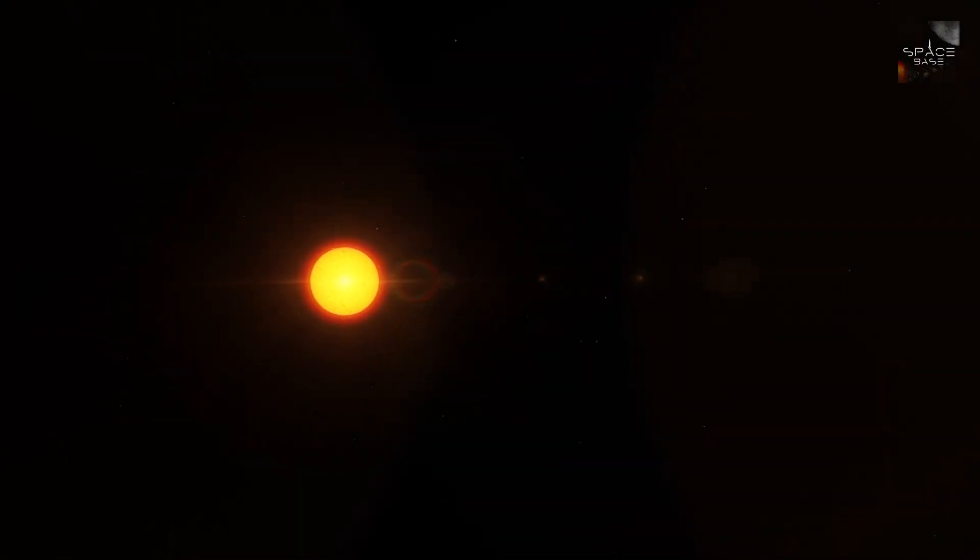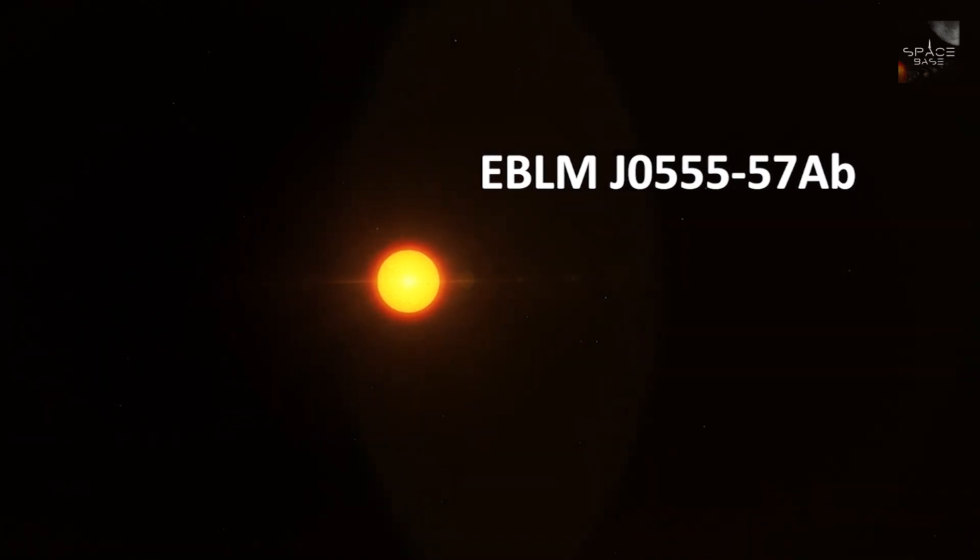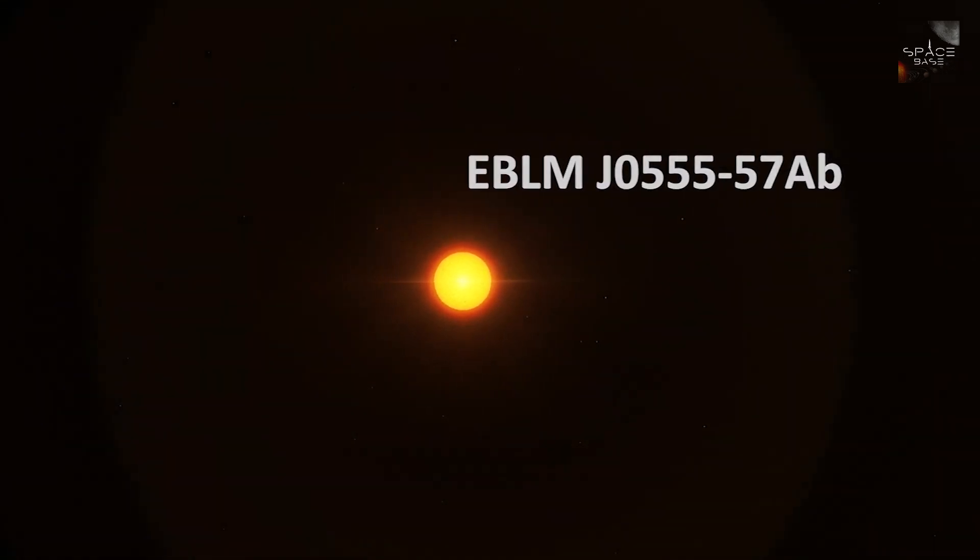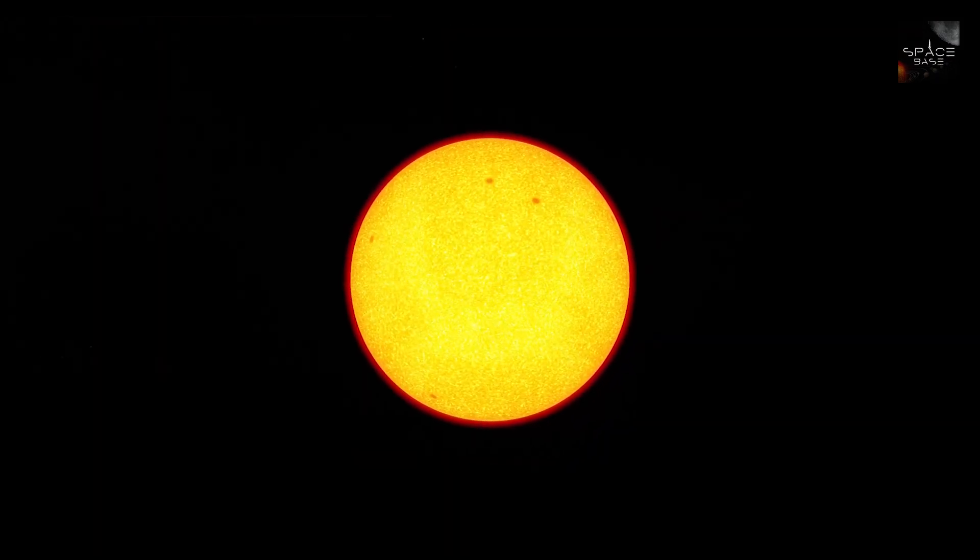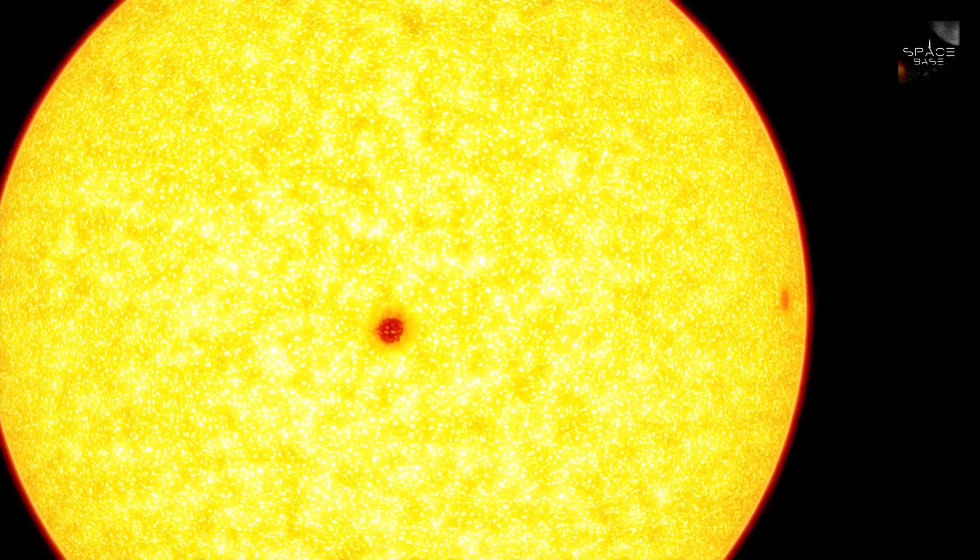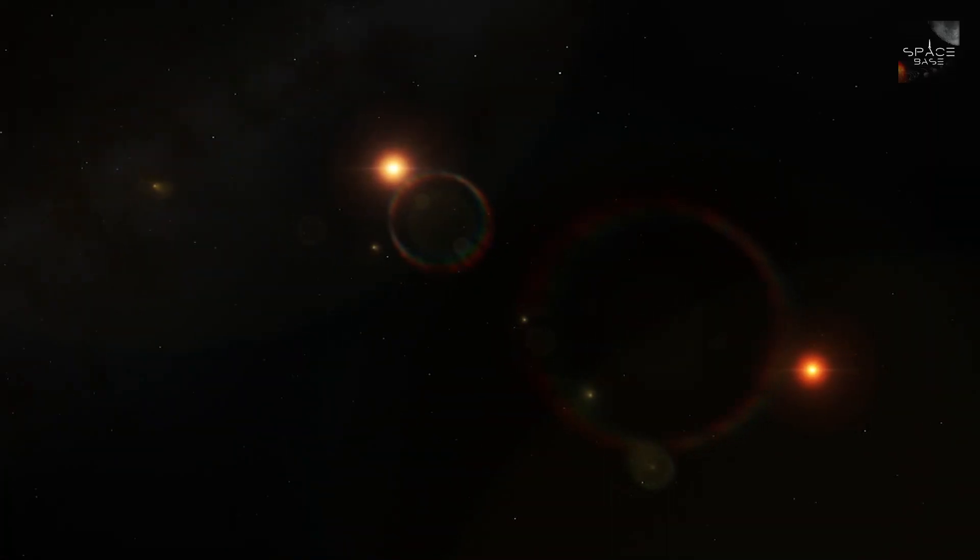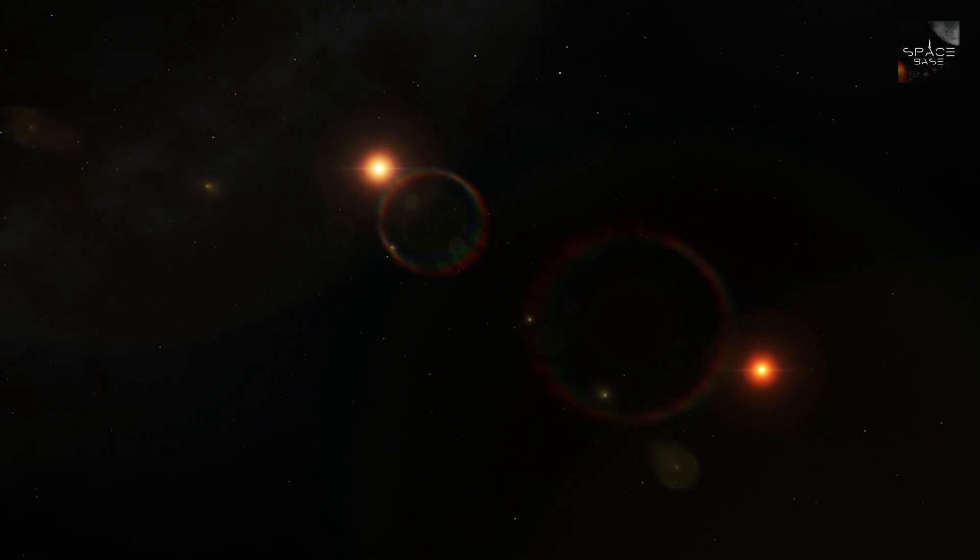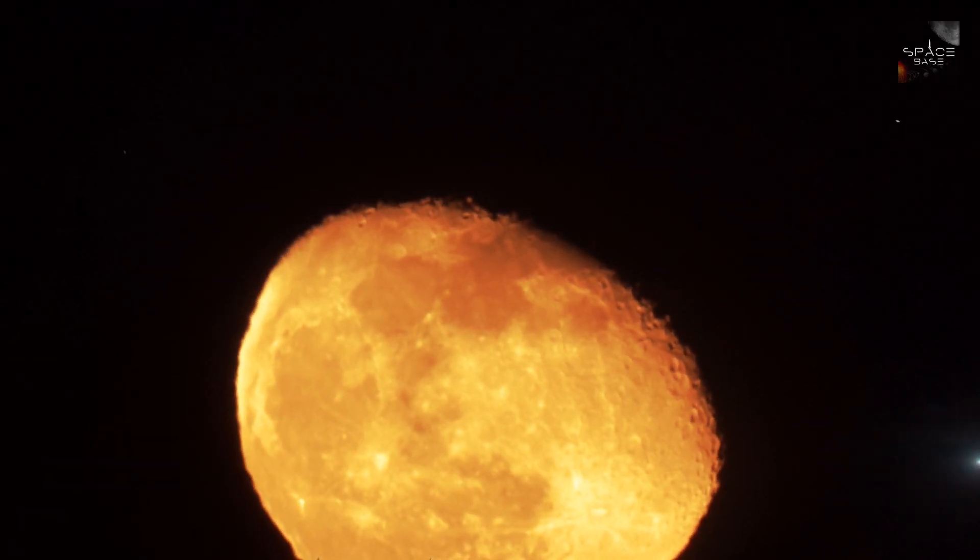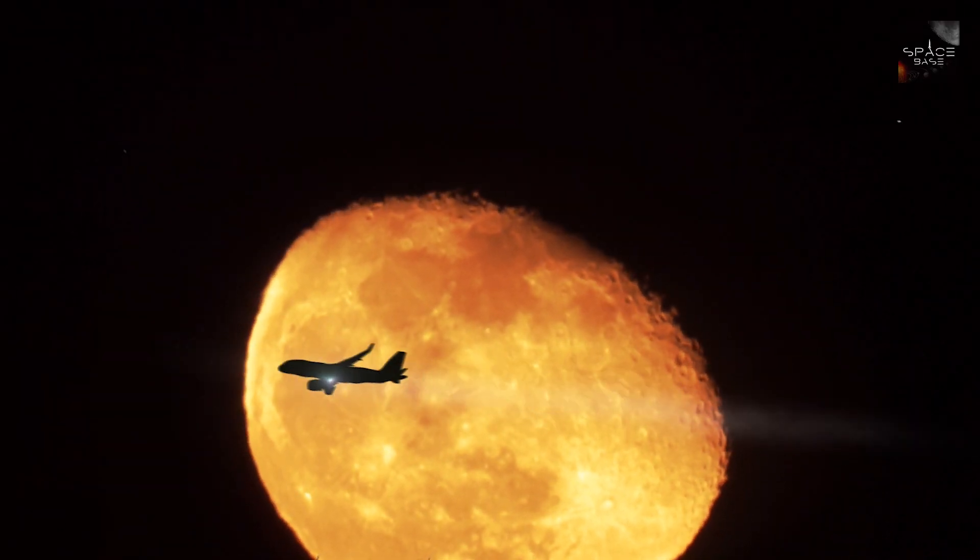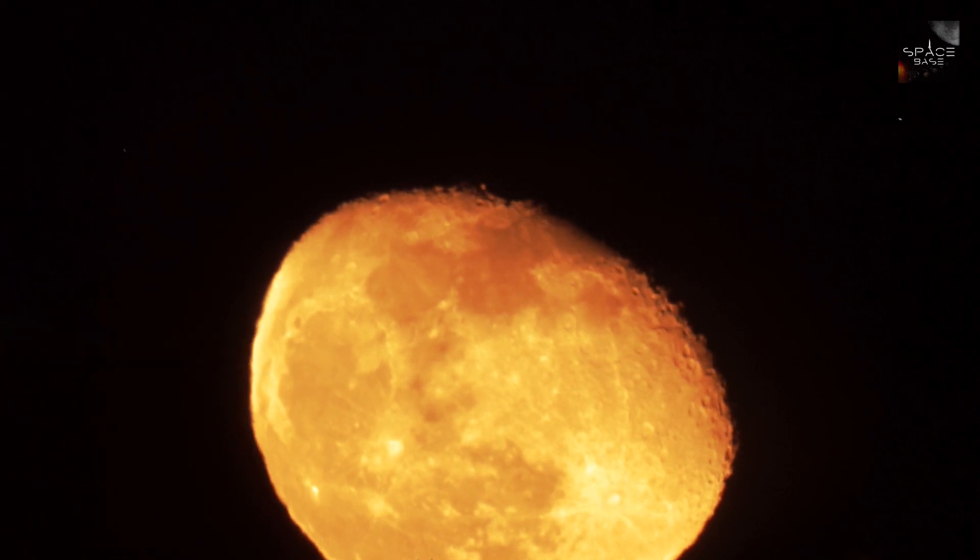EB, or as the catalogue has it, EBLM J0555-57AB, was discovered in 2017 by a group of astronomers at the University of Cambridge. EB is the smallest known star in the cosmos. This tiny little object is part of a triple star system that lies 600 light-years away from Earth. If we were to pay her a visit, it would take 600 million years with an Airbus A380.